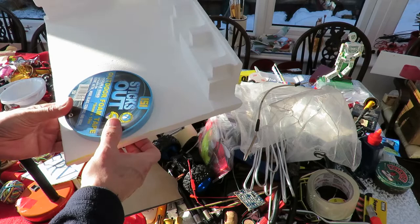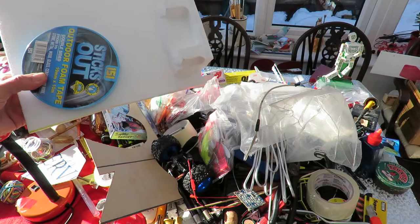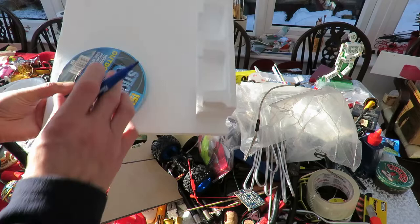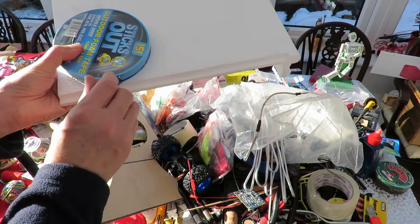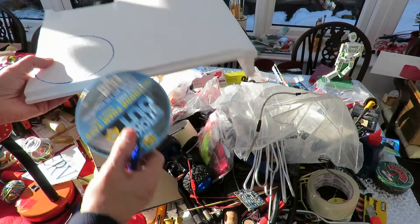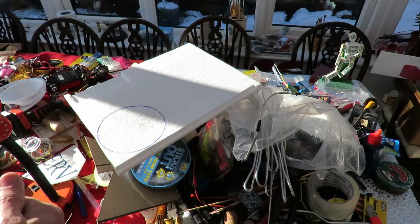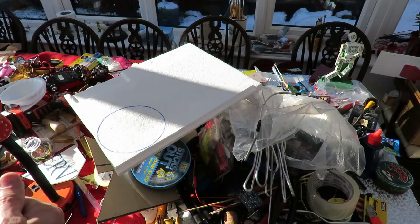So I'll cut a circle. I'm not sure quite how big it needs to be. Probably doesn't need to be that big but that's a convenient thing to draw around. I'll cut that out with the sharpest knife I can find. Bend up a tube, stick it through and see if it spins round with a tea light under it.